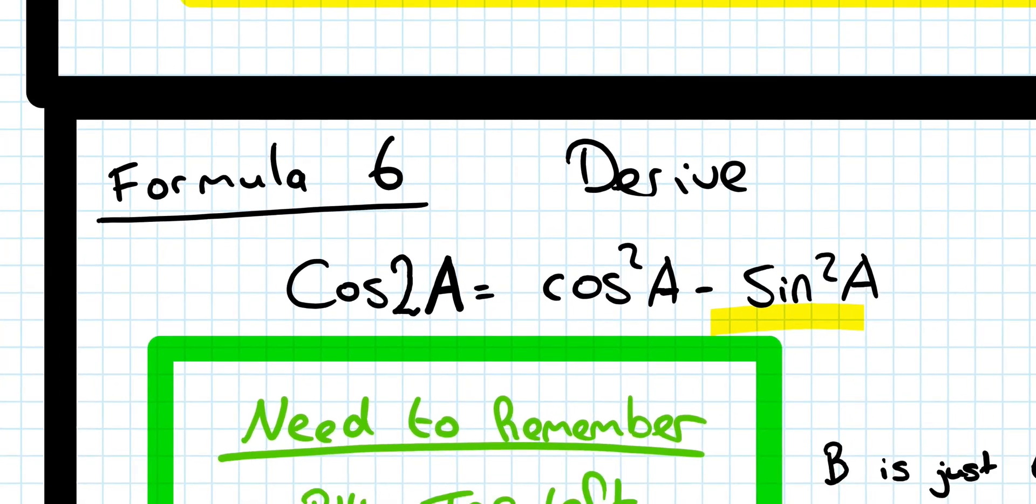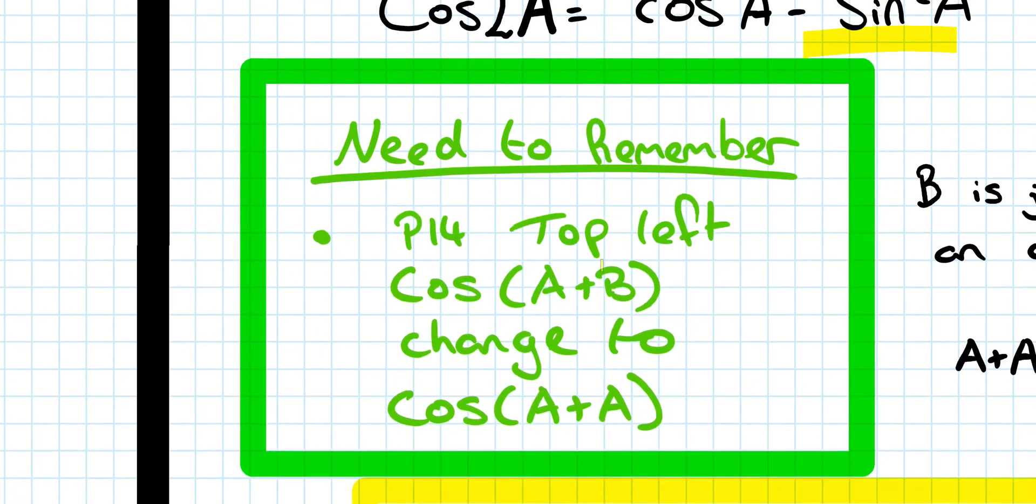What you need to remember is page 14. It's on the top left-hand corner where you've got the formula cos(A+B). And what you end up doing is changing it to cos(A+A).